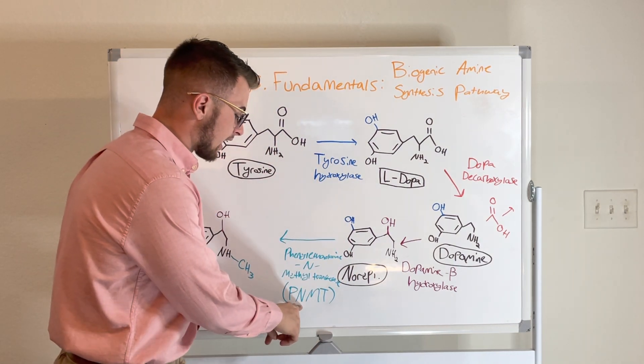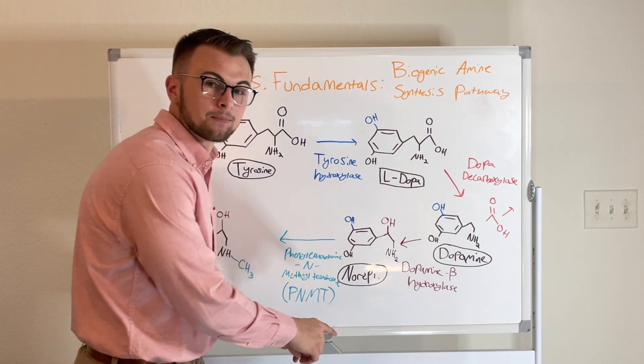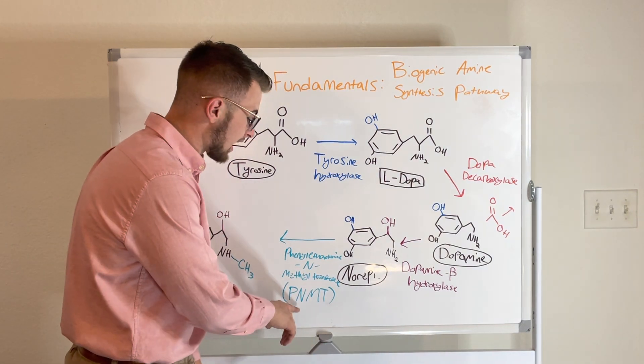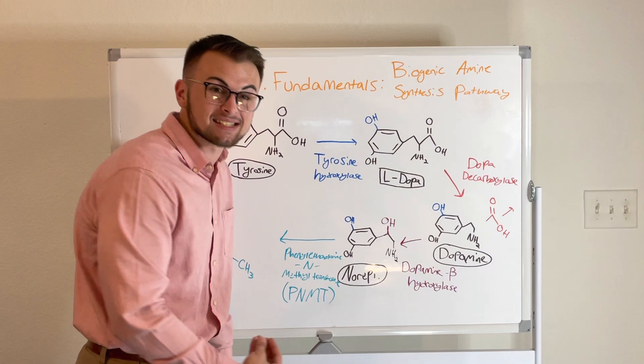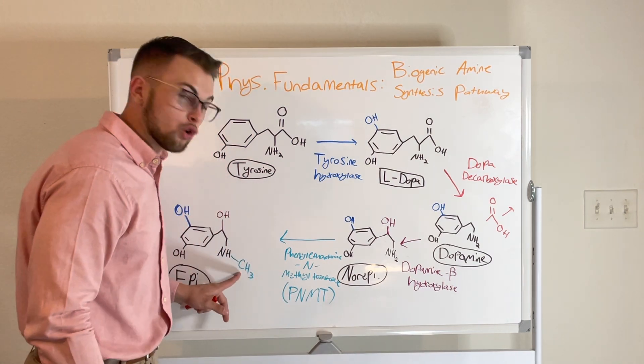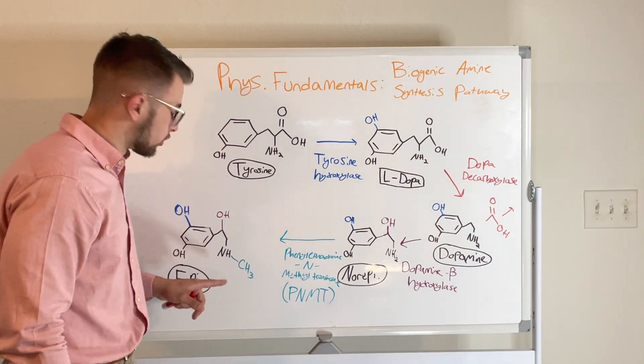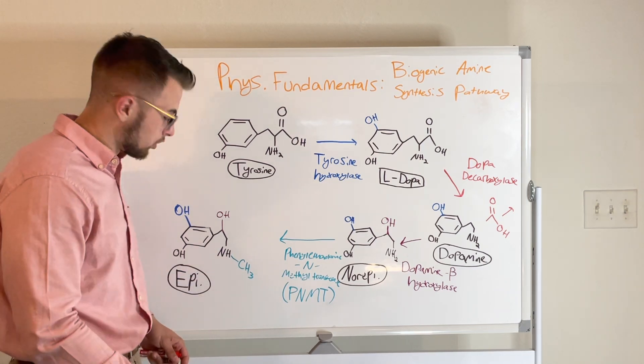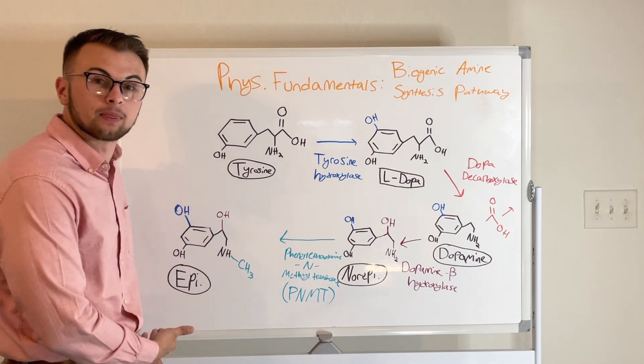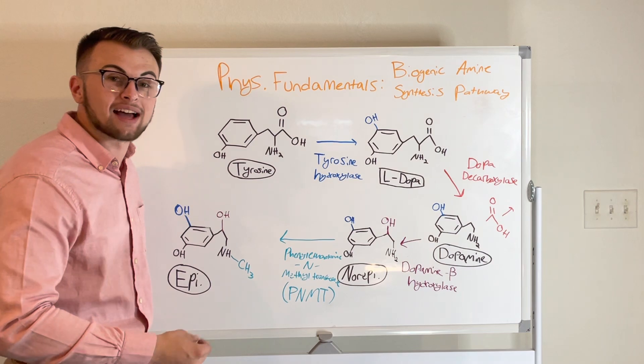Our PNMT enzyme would methylate our norepinephrine and our new substance would be called epinephrine. This is commonly known as adrenaline.